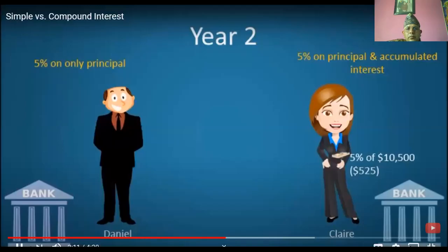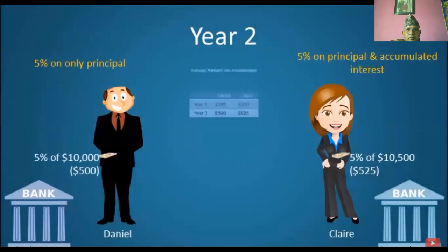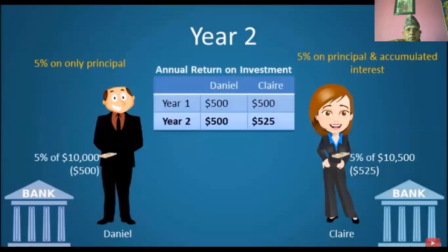Claire will earn $525 in year 2, bringing her total capital to $11,025. Meanwhile, Daniel will earn $500 in year 2, bringing his total capital to $11,000. So after year 2, Claire has made $25 more than Daniel, all without lifting a finger.